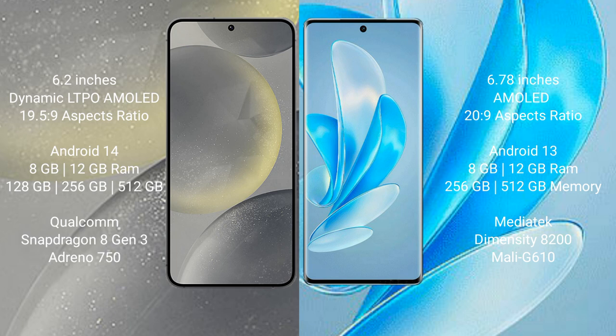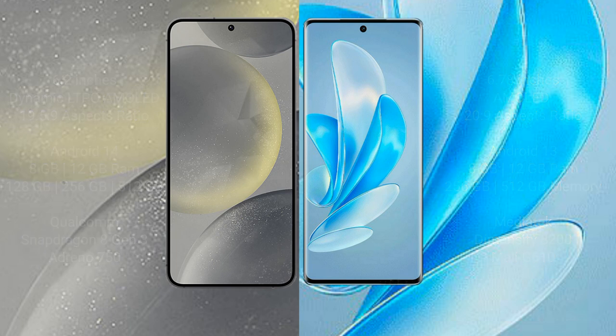Samsung Galaxy S24 comes with 8GB RAM and 128GB or 256GB internal storage, with a Qualcomm Snapdragon 8 Gen 3 processor and GPU Adreno 750. Vivo A17 Pro comes with 8GB RAM and 256GB internal storage, with a MediaTek Dimensity 8200 processor and GPU Mali-G610.